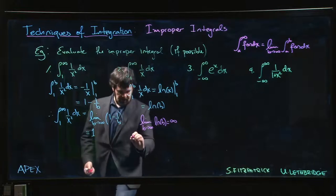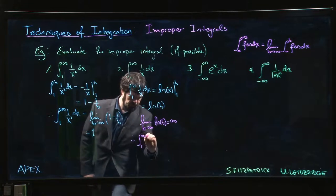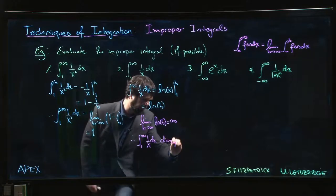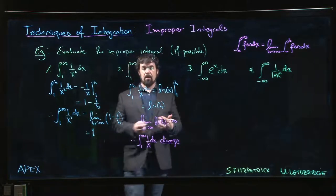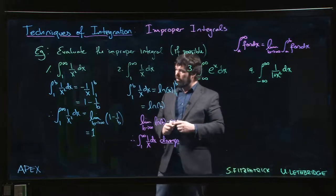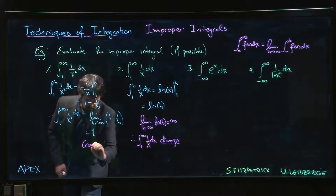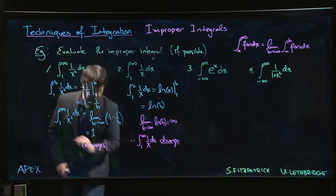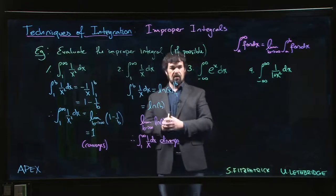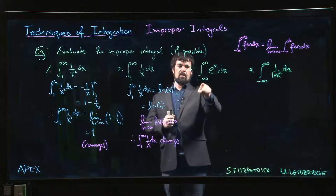If the integral does not give us a finite value, we say that the integral diverges. When we say an improper integral diverges, we mean we cannot get a finite value out. If you do get a finite value, then the integral converges. So: converges if you get a finite number, diverges otherwise.